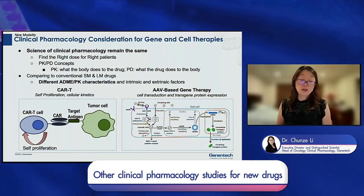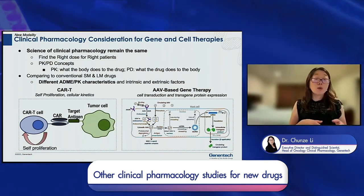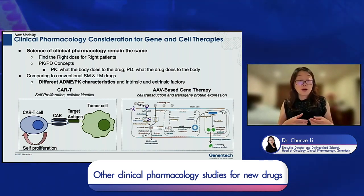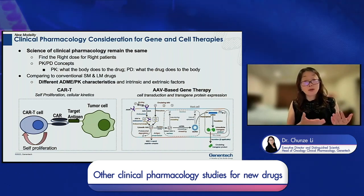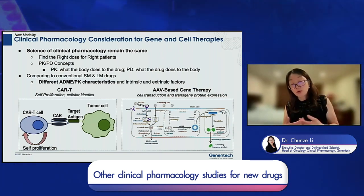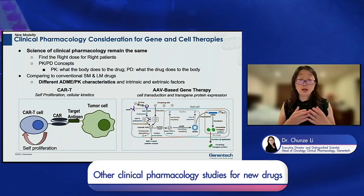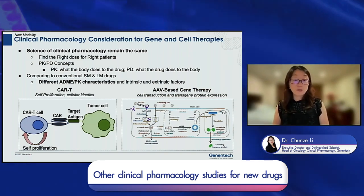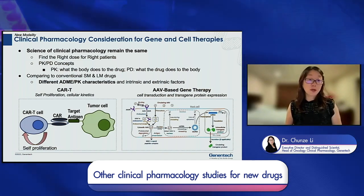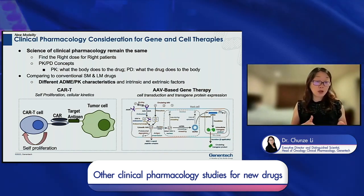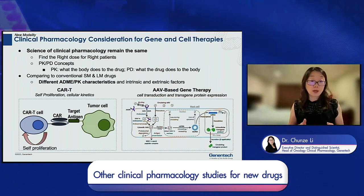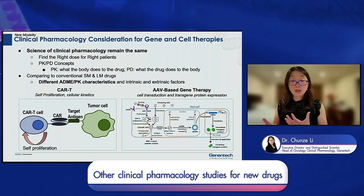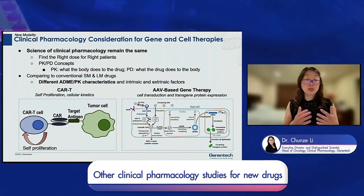Compared to conventional small and large molecules, gene and cell therapies have quite different pharmacokinetic characteristics and intrinsic/extrinsic factors influencing those processes. For CAR-T, once bound to the target antigen on the tumor, the cells self-proliferate — they are living cells that the body tries to eliminate. For AAV-based gene therapies, the virus follows a viral life cycle: it's taken up by cells, enters the nucleus as episomal double-stranded DNA, which is quite stable and can be transcribed into transgene mRNA and translated into transgene protein, continuing to produce the transgene product over time.